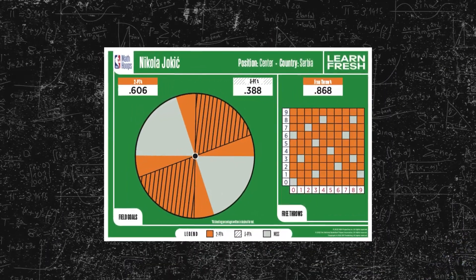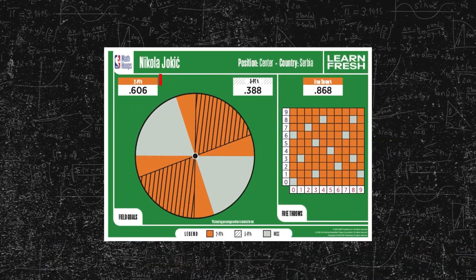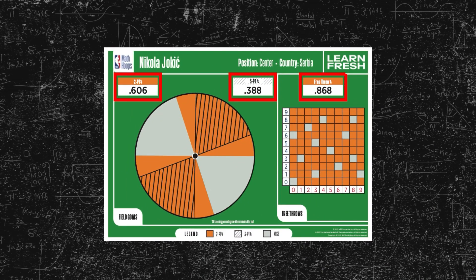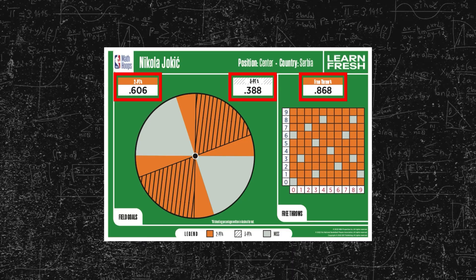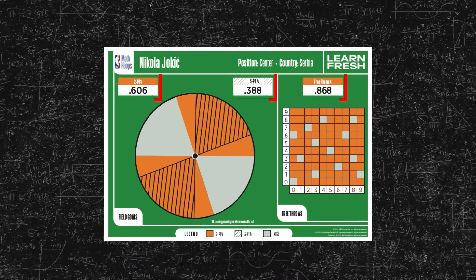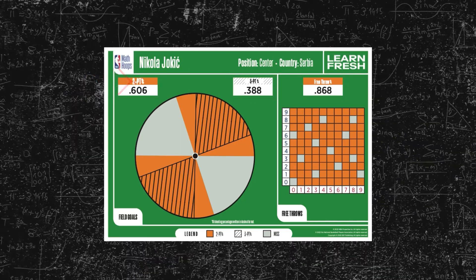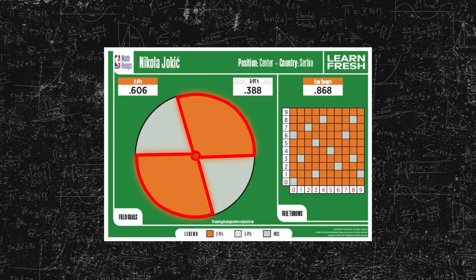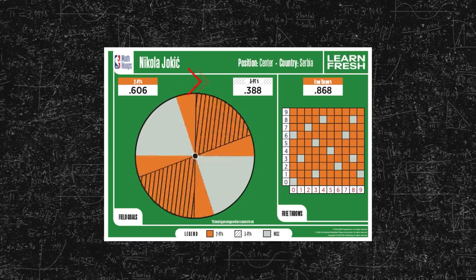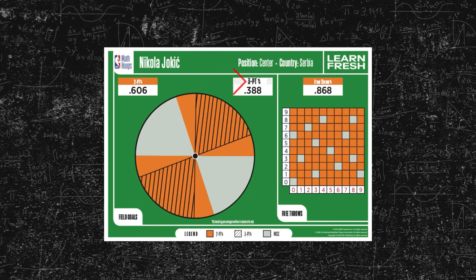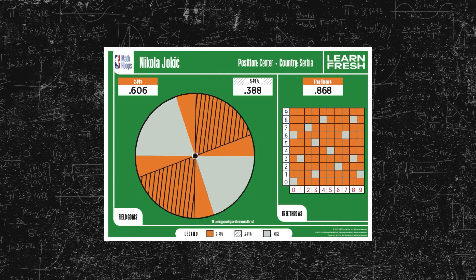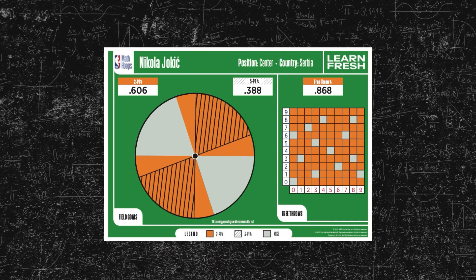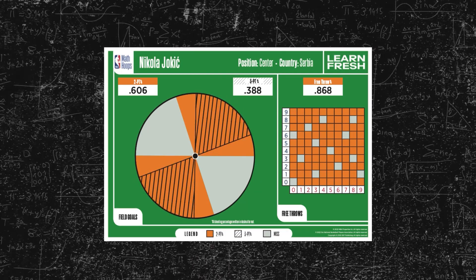On the back of the player cards you will see three different stats and percentages. In the top left corner you'll see the two-point percentage, which is represented in the orange area of the circle graph. In the middle of the card you'll see a three-point percentage, which is represented in the black lines on the circle graph.